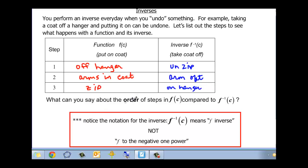What can you say about the order of the steps in the function f(c) and the inverse function f inverse of c? You can say that the order is the opposite order. And you could also say, along with order, we could also say that it's the opposite actions. And I want you to notice here that the inverse function f to the negative first c doesn't mean f to the negative one power. It looks like f to the negative one, but you'll notice I was saying f inverse of c. That's the way that's read, f inverse of c.